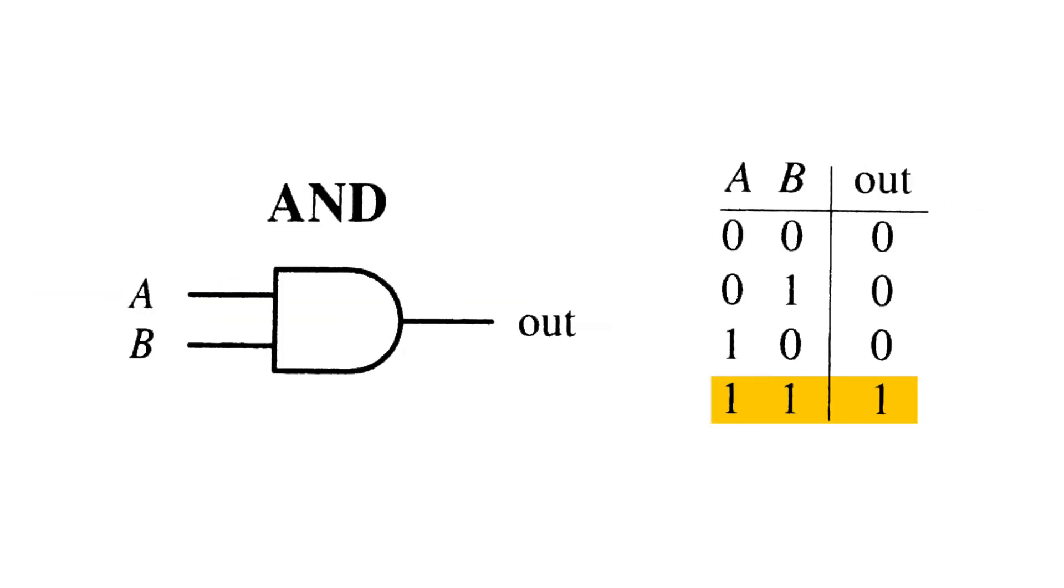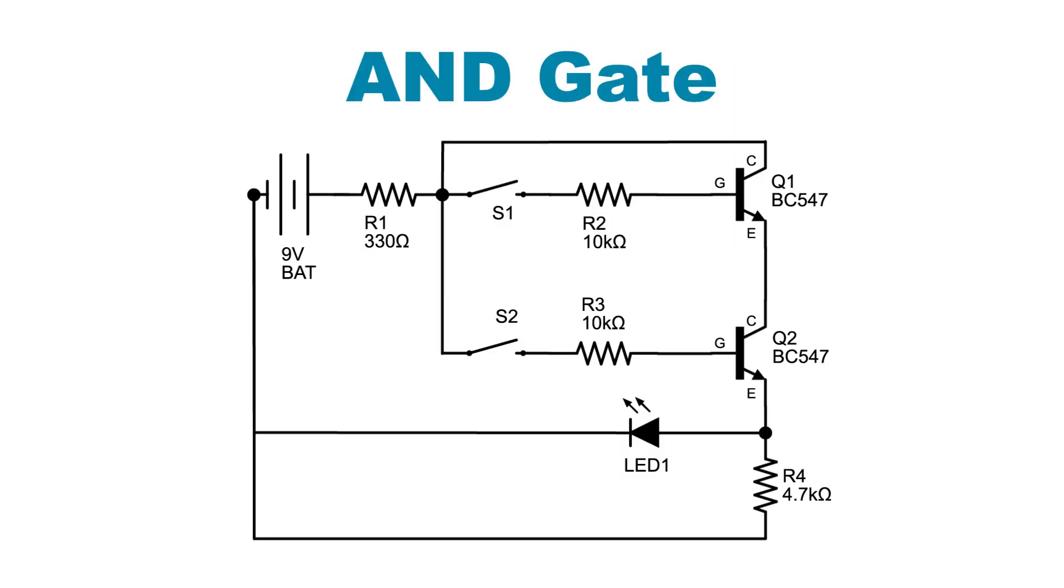An AND gate needs both inputs to be high for the output to be high. Otherwise, the output is low. To supply positive voltage to the LED, power needs to come through Q1's collector and then through Q2.